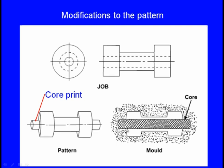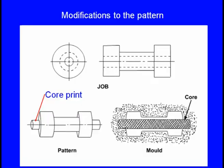The core print is an extra projection on the pattern to enable or to support the core inside the mould cavity. Similarly, it also refers to the extended portion of the core itself.